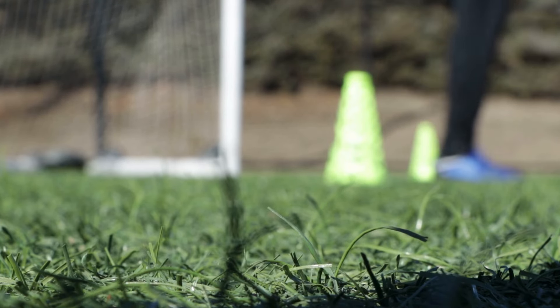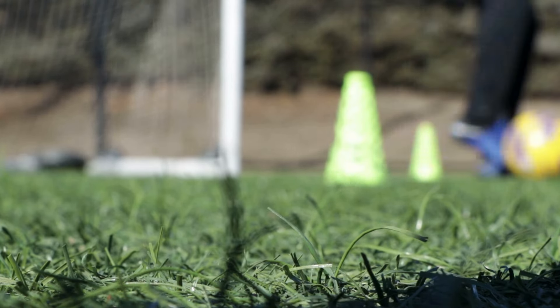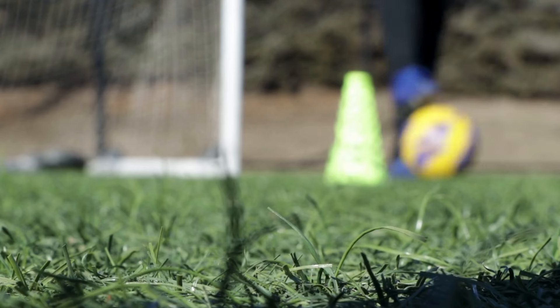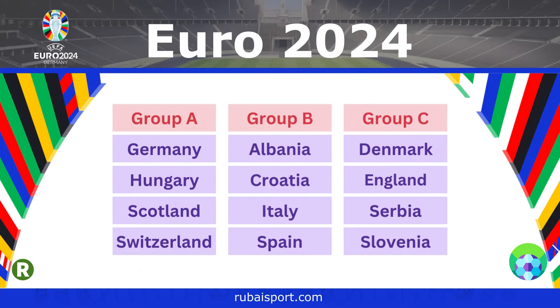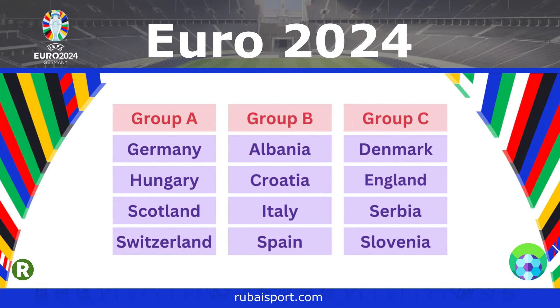Before we dive into the fixtures, let's take a quick look at the groups. Group A: Germany, Hungary, Scotland and Switzerland. Group B: Albania, Croatia, Italy and Spain.